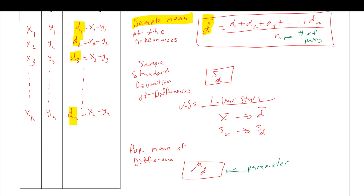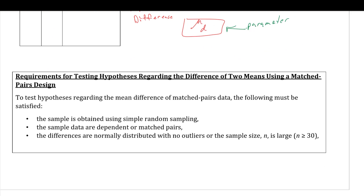If we're doing hypothesis testing on this difference list, we can start talking about the six steps. The requirements to test a hypothesis regarding the mean difference of matched pair data are: the sample is obtained using simple random sampling; the sample data are dependent or matched pairs; and the differences are normally distributed with no outliers, or the sample size n is large. If the number of pairs is greater than 30, then we don't have to know the distribution of the population.